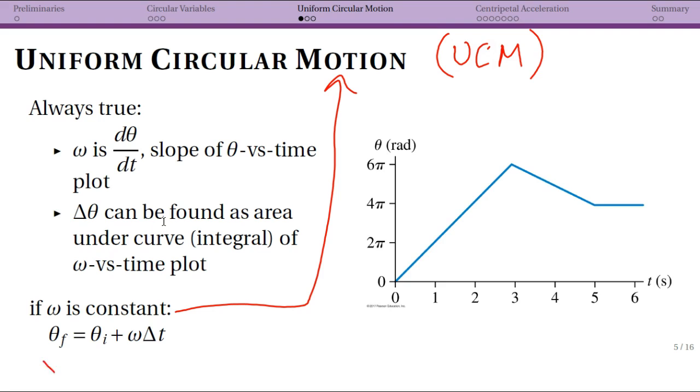This should remind you of another equation: x_f = x_i + vΔt, which was only true if acceleration equals zero. Similarly, in uniform circular motion without angular acceleration, we use this simplified version.